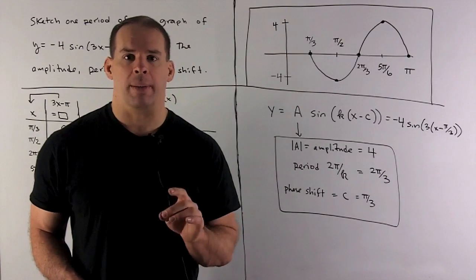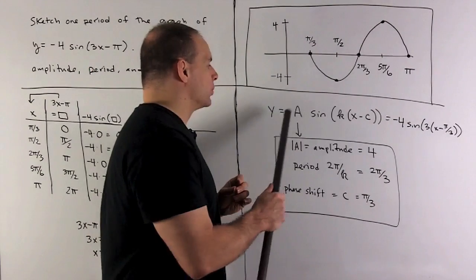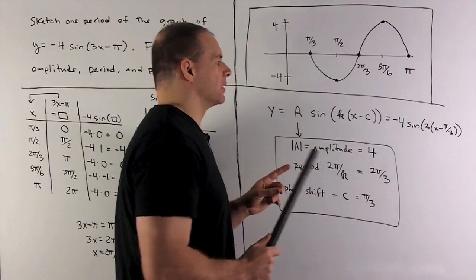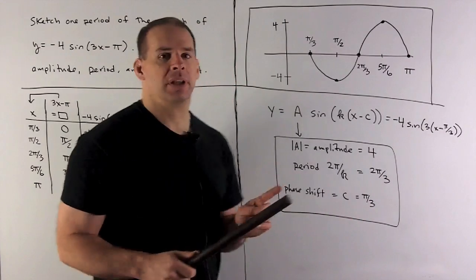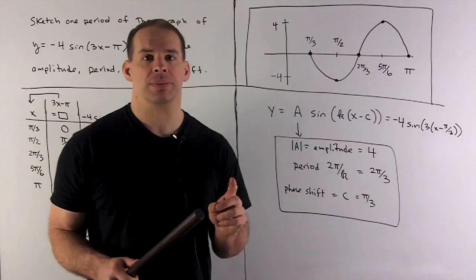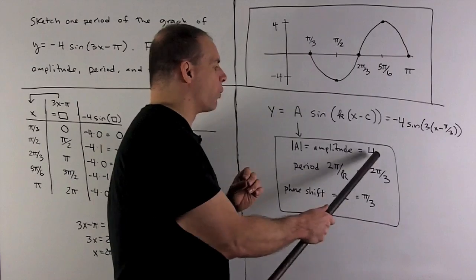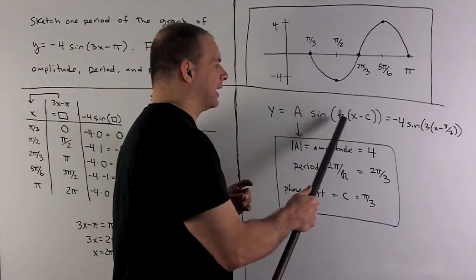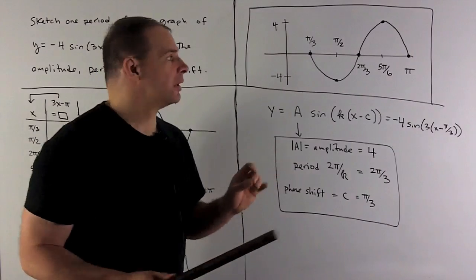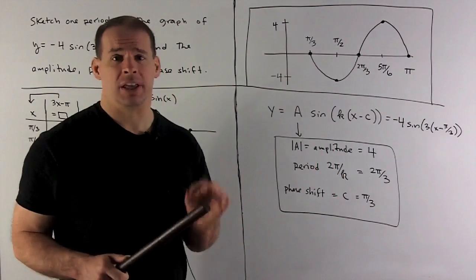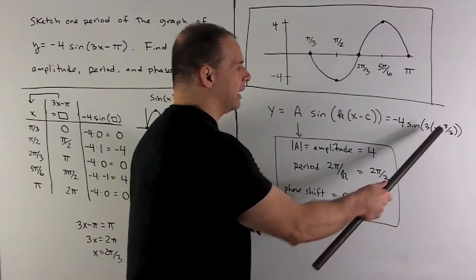How about the second part of the problem? I want amplitude, period, and phase shift. To get that, I need to rewrite my function in the form y equals a sine of k times (x minus c). When I rewrite that: a is minus 4, then we have sine of — we're just going to factor a 3 out — so I have 3 times (x minus pi thirds). The amplitude is just the absolute value of a, so throw away the minus sign — it's 4. For the period, we take 2 pi divided by k, divide by 3, and we get 2 pi thirds. For the phase shift, that's just going to be c — that's going to be pi thirds.